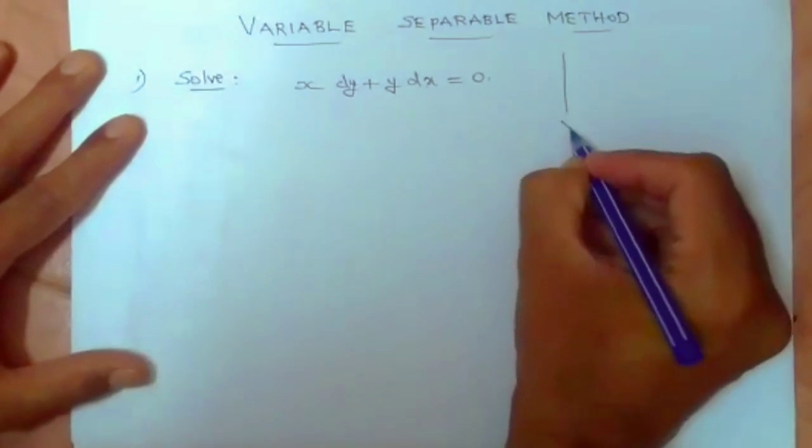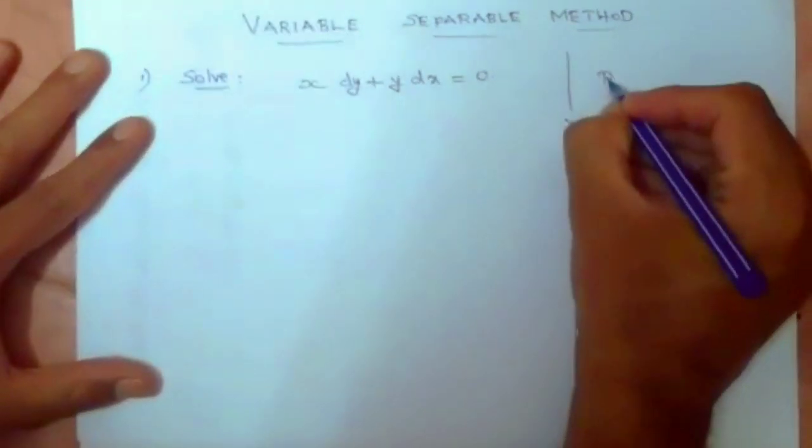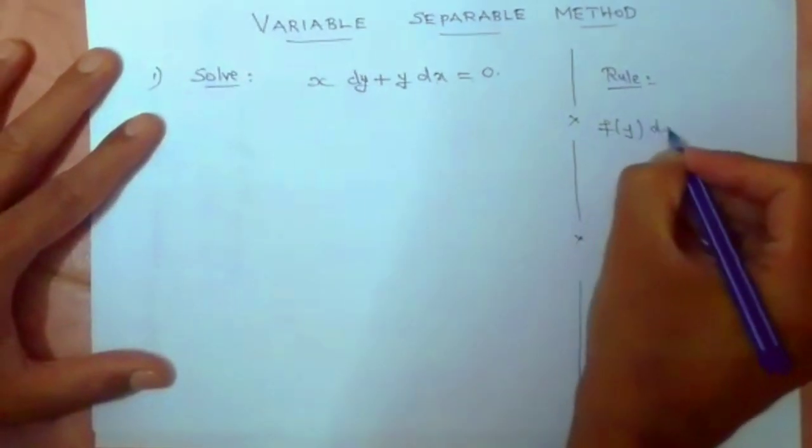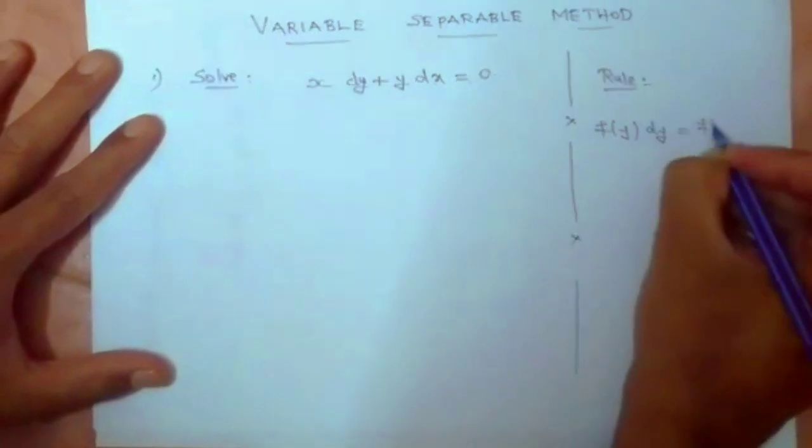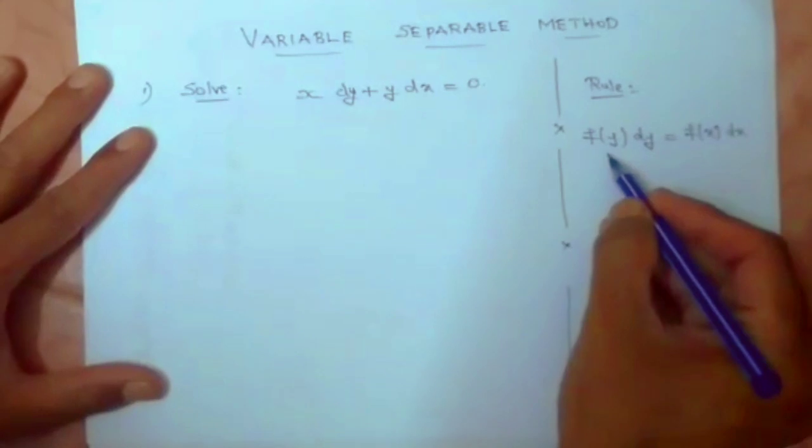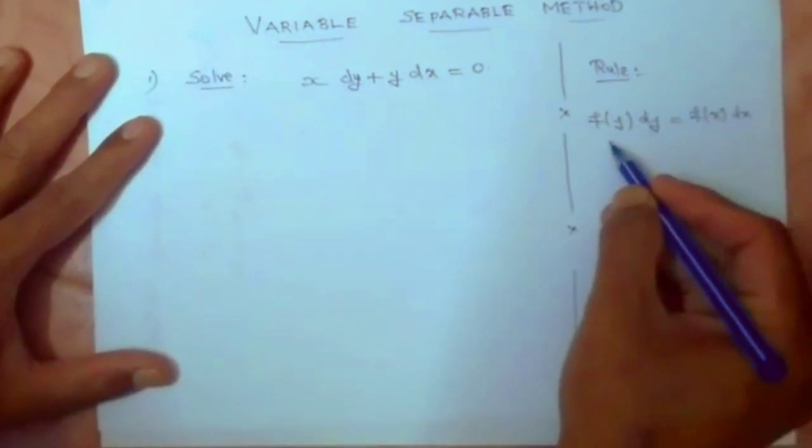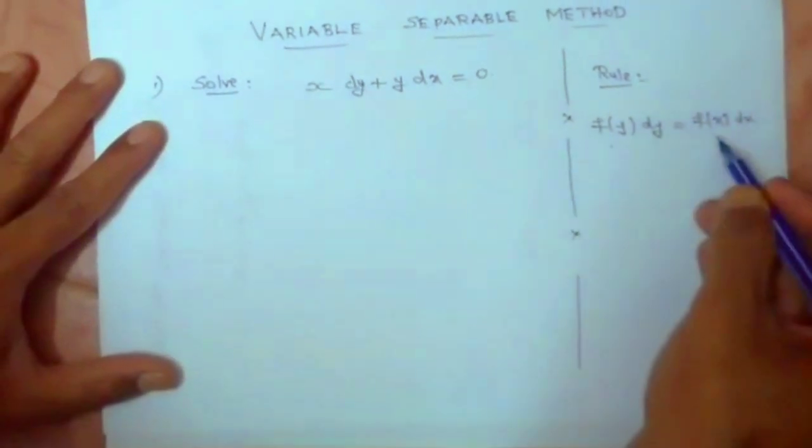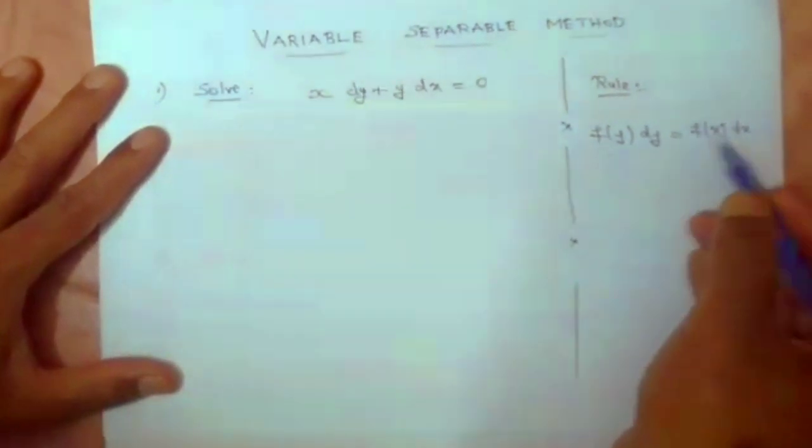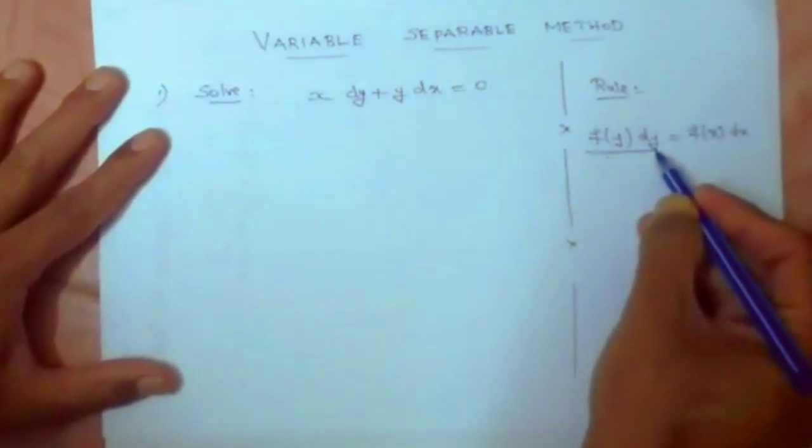For solving variable separable method, this rule is very important: f(y) into dy equal to f(x) into dx. Y expressions along with dy is to be kept on the left-hand side, and on the other side, expressions in x along with the derivative dx. So y terms on one side along with dy, x terms on the other side along with dx.